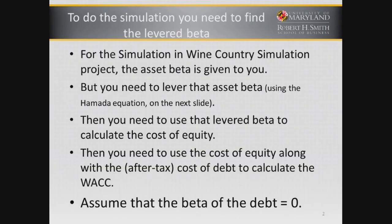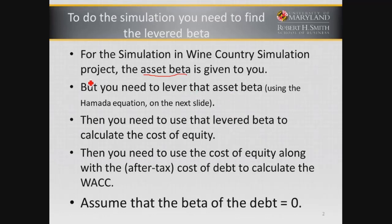For the simulation, we have given you an asset beta, but you need to have the levered beta. This is because when we have debt, it will increase the cost of equity — the required return on equity — because equity is riskier since the firm must pay interest payments on the debt. We're going to use the Hamada equation to lever our asset beta, and then you will use that levered beta to calculate the cost of equity.